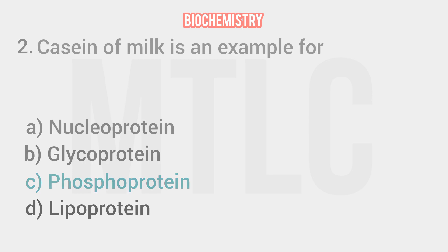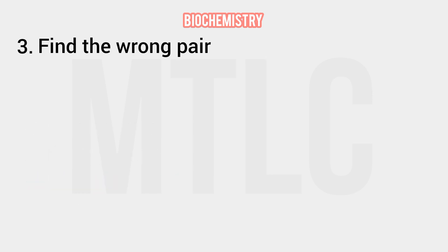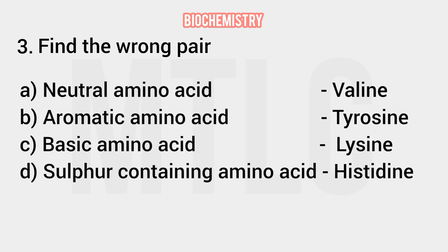Third question: find the wrong pair. Neutral amino acid Valine is correct. Aromatic amino acid Tyrosine is correct. Basic amino acid Lysine is also correct. Sulfur-containing amino acid Histidine — that is the wrong answer, because Histidine does not contain sulfur.